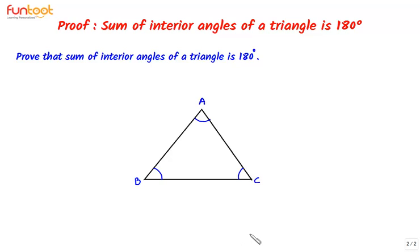We will do this proof using the properties of parallel lines. But in triangle ABC we can't see any parallel lines, so we will have to convert this problem into a problem of parallel lines and transversals. Let's discuss the approach to solve this problem.